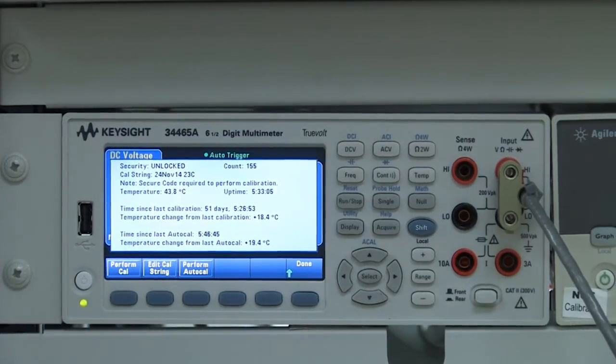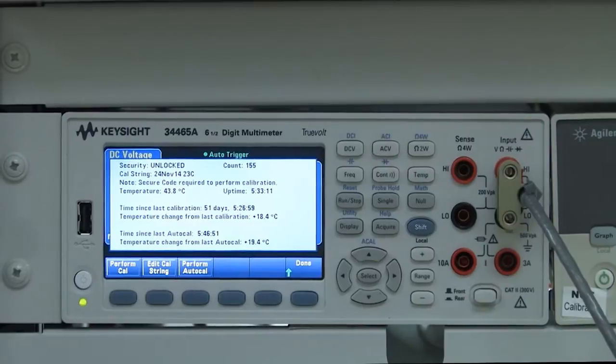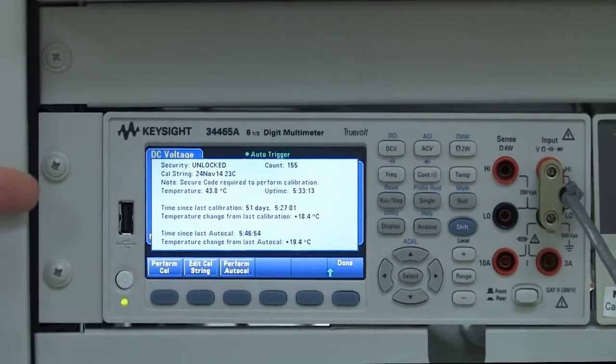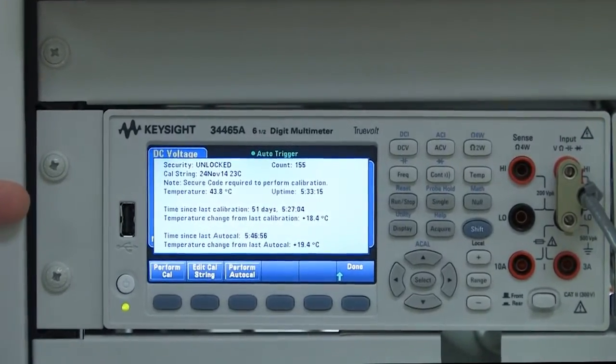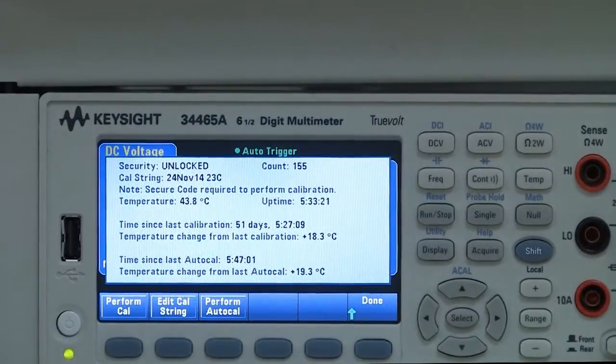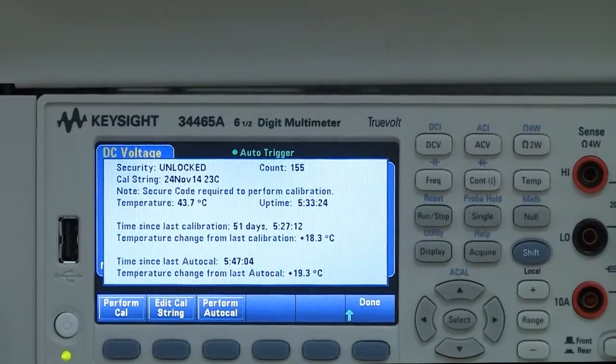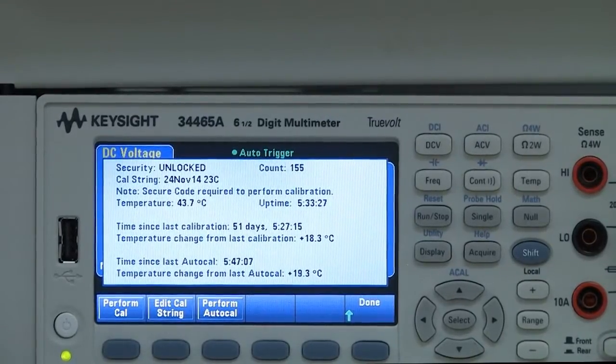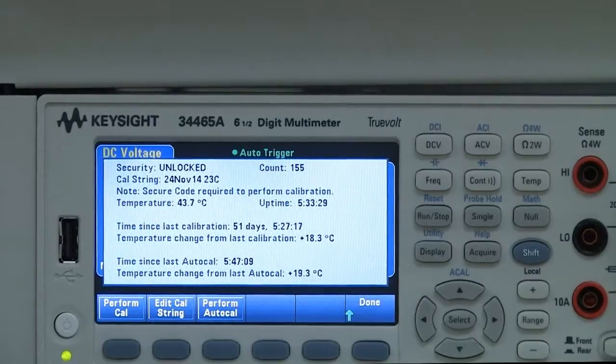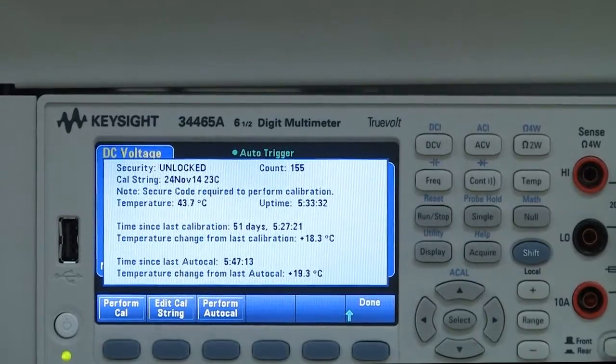Using this method brings up a calibration window which is very useful. The calibration window includes information such as the current internal temperature of the instrument, the up time or the time the instrument has been continually powered on, the time since the last full calibration, the difference in temperature since the last full calibration, the time since the last auto cal, and the temperature since the last auto cal. For our application, we have seen the temperature increase by 19.3 degrees.